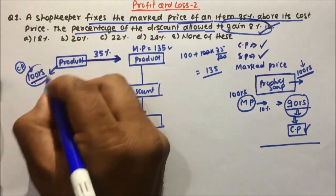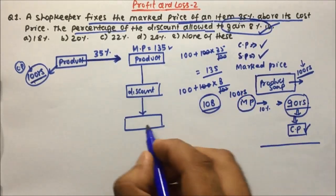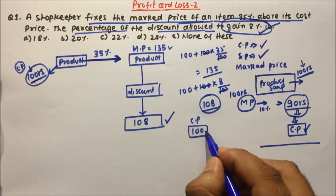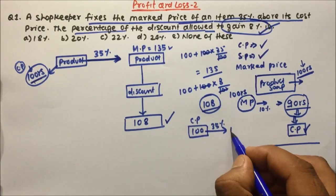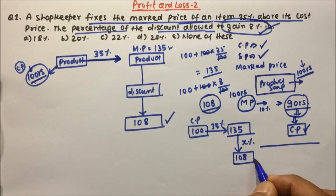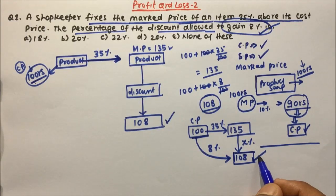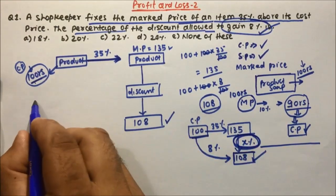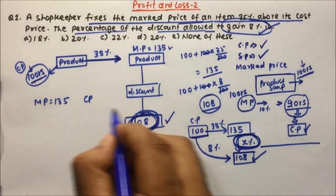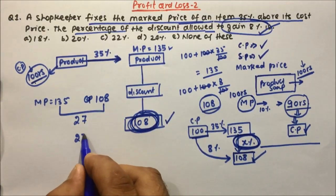A profit of 8 percent on a cost price of 100 rupees means the shopkeeper should receive 108 rupees. So the sequence is: the shopkeeper bought at 100 rupees, marked the price at 135 rupees, then gives some discount, and still receives 108 rupees — giving a final profit of 8 percent. The marked price is 135 rupees and after discount he is getting 108 rupees, so the discount amount is 135 minus 108 equals 27 rupees.